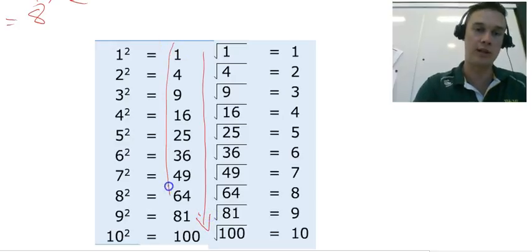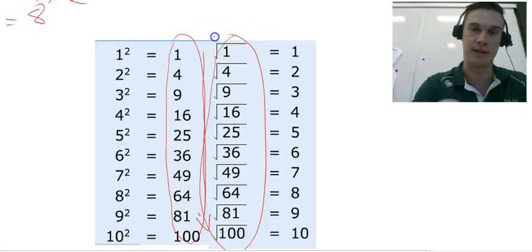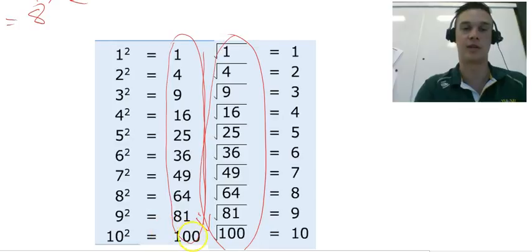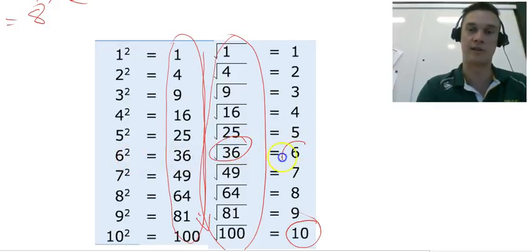If you know these 10 numbers, you're going to easily be able to square root these numbers here. I know that 10 times 10 equals 100, so if I see the square root of 100, I know the answer is going to be 10. If I see 36, I know that the square root of 36 is going to be 6.